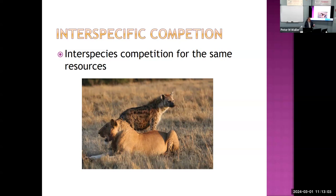Lions and hyenas hate each other — they kill each other's young and attack each other. Hyenas seem able to attack a female lion but not a male lion. They share the same resources: killing animals and scavenging. What's interesting is that they both survive and are obviously still present in the same regions. That's one of the outcomes of interspecific competition — that both species survive.